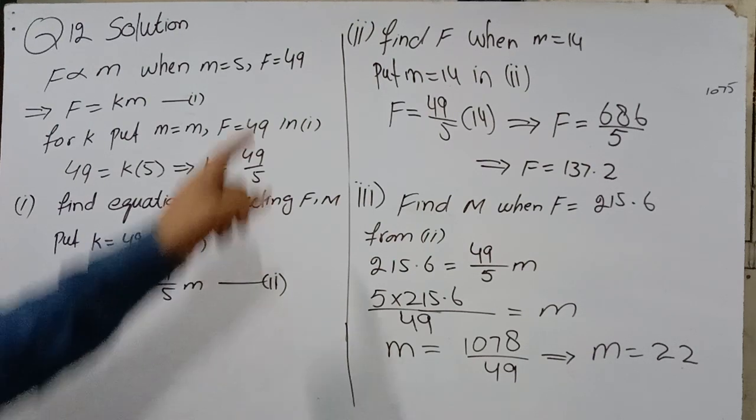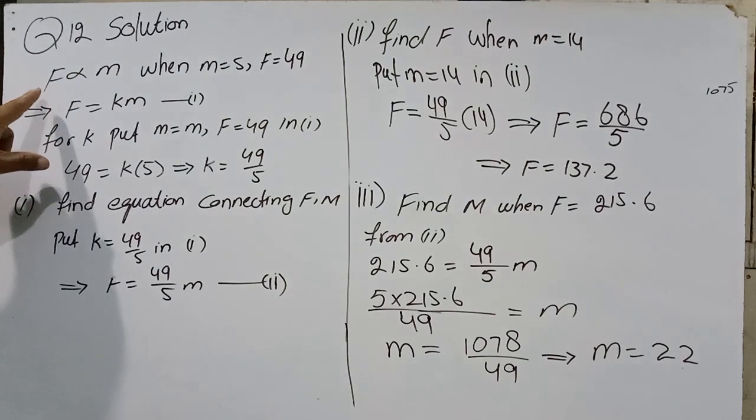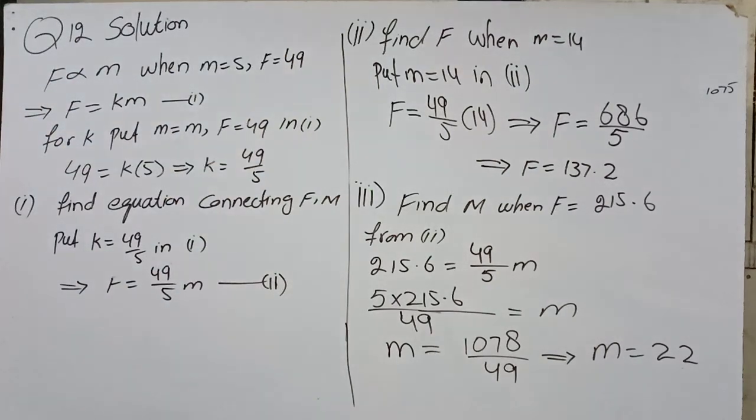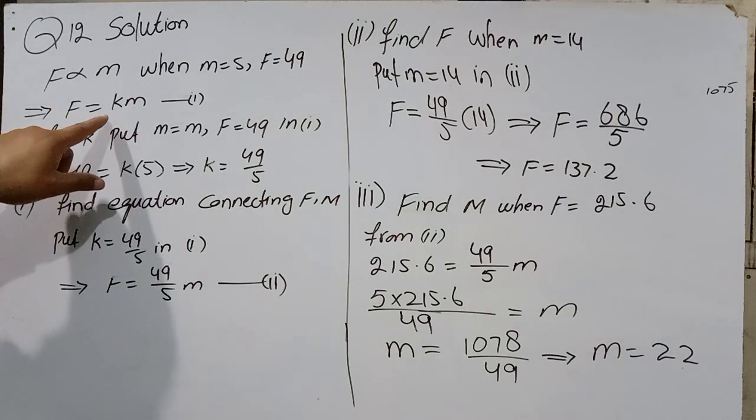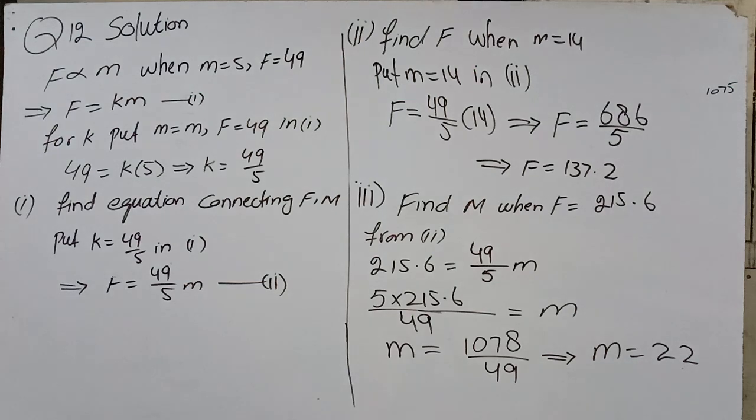When M is 5 (M is mass), F is force. Force is 49 Newtons. We write in mathematic form: F = KM. Remove the proportionality sign with equal sign. F = KM. This is equation number 1.